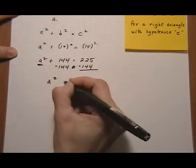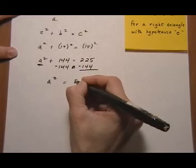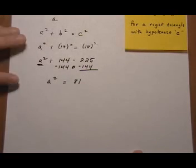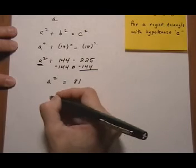So that gives us A squared equals 81. Now if A squared, if some number squared equals 81, that number must be the square root of 81.